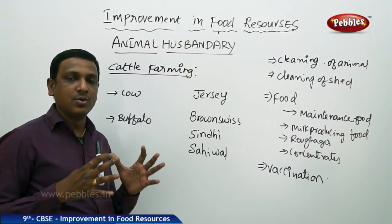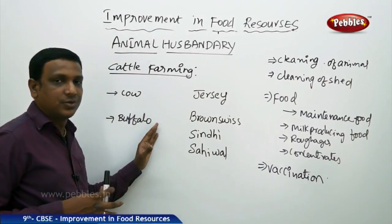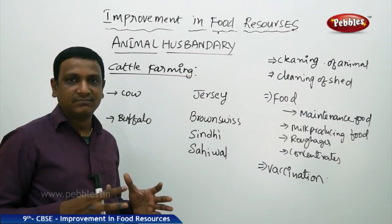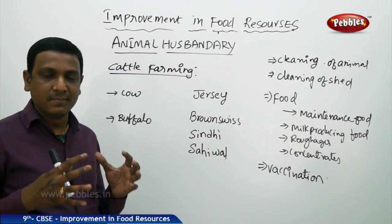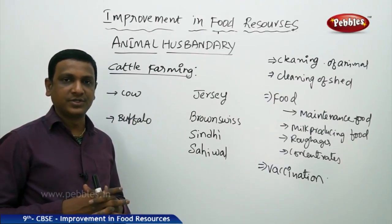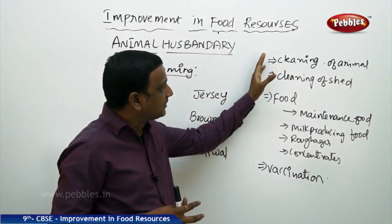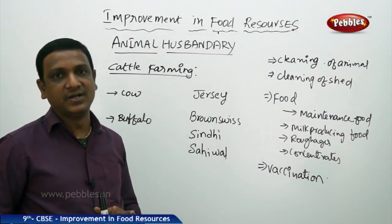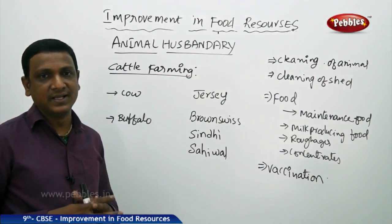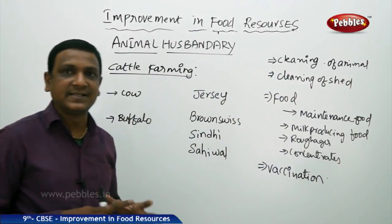These animals need to be taken care of under animal husbandry. Cleanliness of the animal is primary, as cattle living outside are exposed to dust, worms, and parasites. Animals are to be kept in sheds and regularly cleaned. Cleaning involves the animal body as well as the shed, since the animal body has dirt and loose hair that must be brushed regularly.